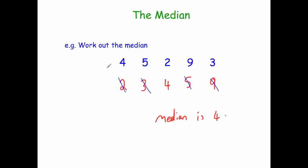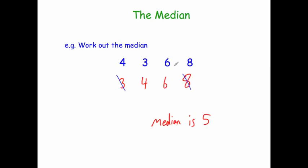To find the median, arrange your numbers numerically from smallest to largest, then cross them off until you find the middle one. If you've got two in the middle, find the middle of those two values. And that's it.